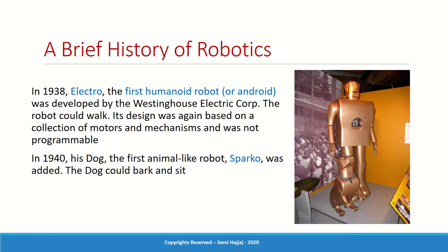Also in 1938, the first humanoid robot — or android — called Electro was developed. Although it looked like a human being with arms and legs, on the inside it was an elaborate set of motors, gears, and mechanisms — nothing to do with controllers or programming, because at the time that technology had not yet been developed.